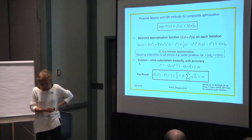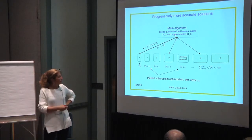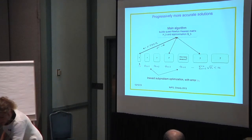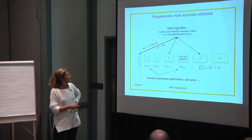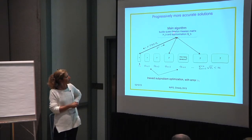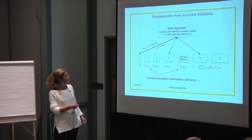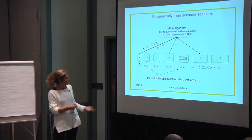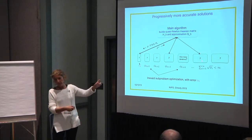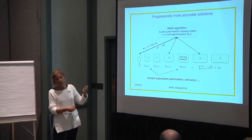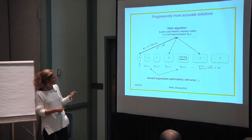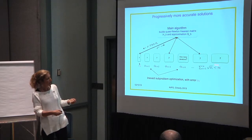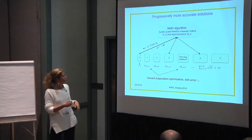The main algorithm builds a quadratic approximation, passes it to a subproblem solver, solves the subproblem inexactly, passes back the new iterate, and continues. What I'm indicating by increasing sizes of these green rectangles is that we have to put more and more effort as we go along. The question is how much more effort — we need to solve problems to a certain accuracy such that these error terms remain summable.